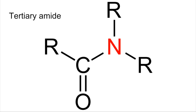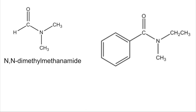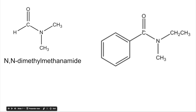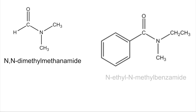For tertiary amides we've got two carbon groups on the N — no hydrogen at all. One example given is N,N-dimethyl methanamide: it would have been methanoic acid with two methyl groups on the N. For the one on the right, that would have been benzoic acid so it's benzamide; on the N we've got an ethyl group and a methyl group. E comes before M alphabetically, so it's N-ethyl N-methyl benzamide.